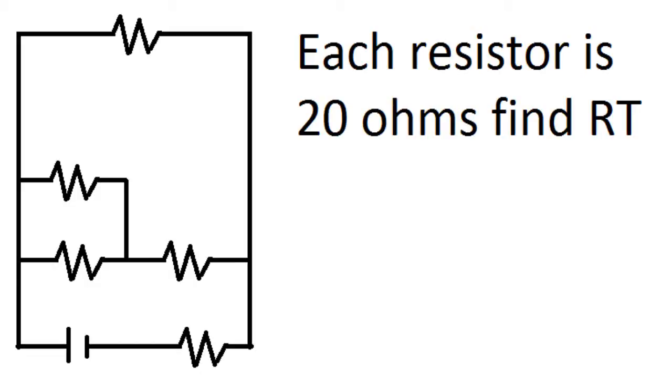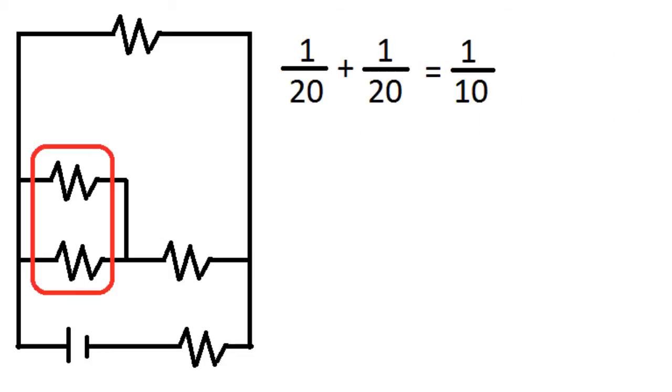We're going to do an example problem where there are series and parallel resistors and each resistor is 20 ohms, and we're going to find RT, also known as resistance total. Basically the way we do this is just keep on condensing the circuit into different sub-RTs. These sub-RTs are the equivalent of having like one resistor there instead of two.